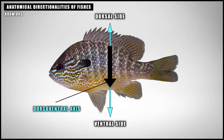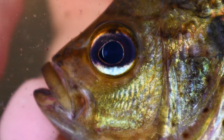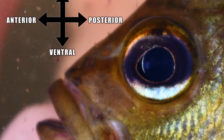Ventral describes the direction towards the belly. The belly, breast, pelvic fins, anal fin, anus, and urogenital opening are all located on the ventral region of sunfishes. Ventral, like the other four common directionalities, may also be used to describe a feature more precisely.